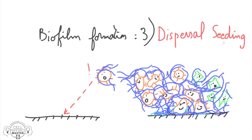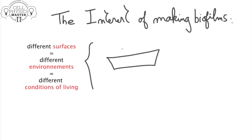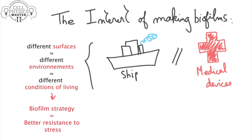Why act like that? What is the interest for a microorganism to gather into a biofilm? Biofilms can develop on a very large number of different surfaces with a wide range of living conditions, such as industrial ships or medical devices like prostheses. The biofilm strategy seems to be especially interesting for survival.